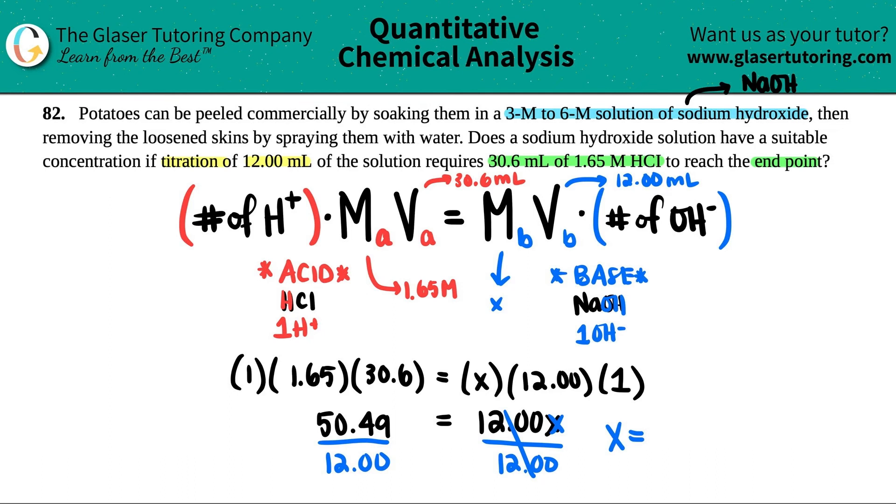And I'm going to have x, which was the molarity of the base. 50.49 divided by 12, and I get roughly four point—I guess we'll do three sig figs—4.21. And that's the molarity of the NaOH. Now the question was, let me do this in blue so that it doesn't color crash. Okay, so this is the molarity that it needs to be, right?